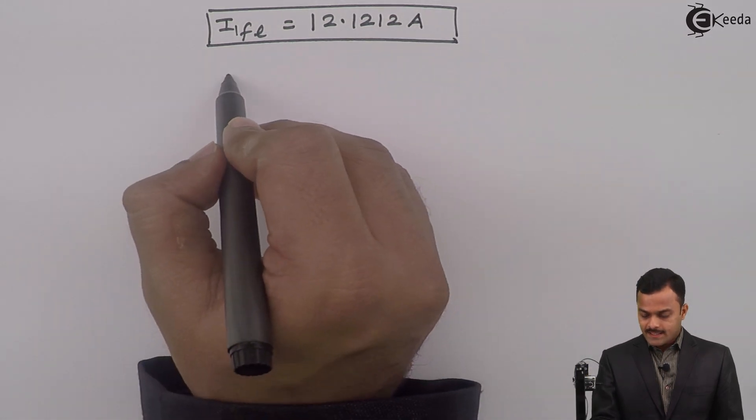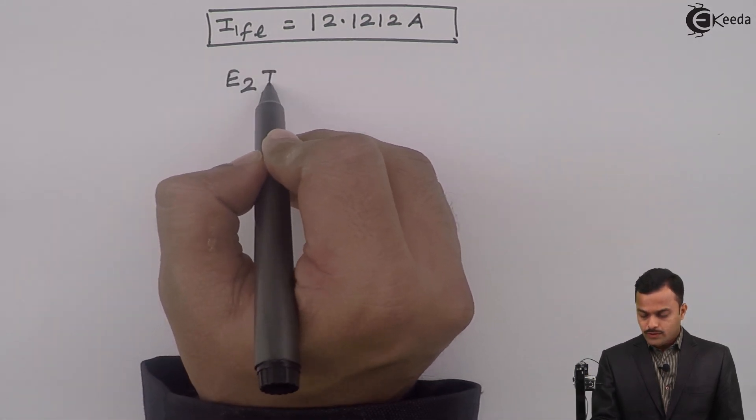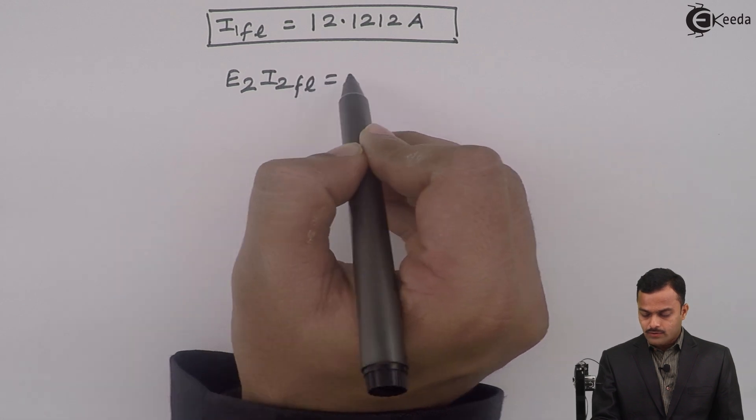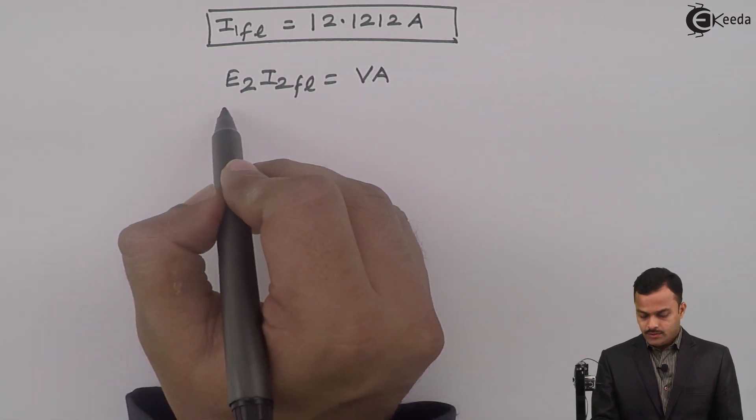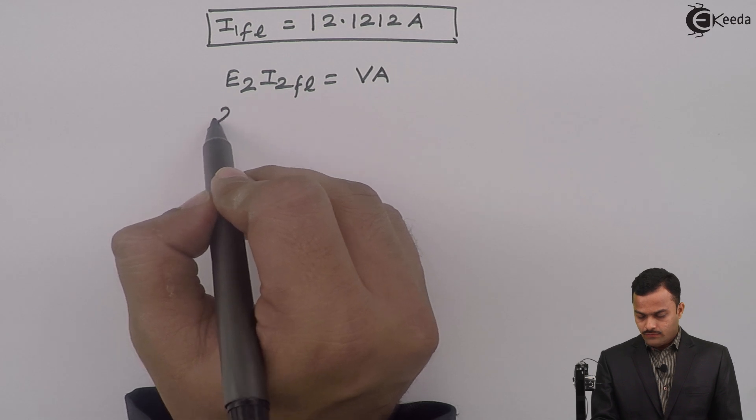Similarly, I can say E2 into I2 FL equal to VA rating of a transformer. E2 is 240.